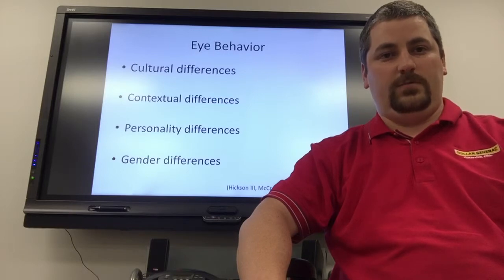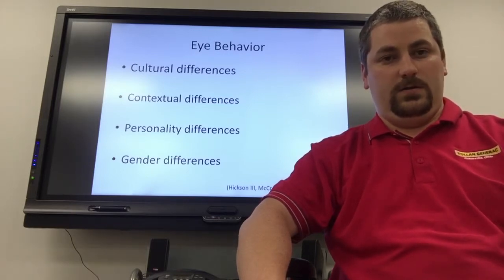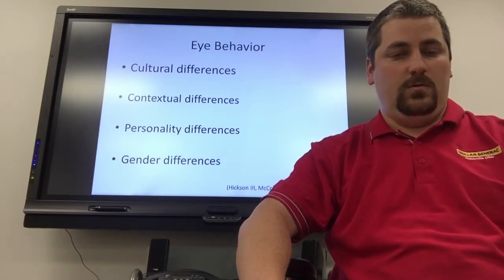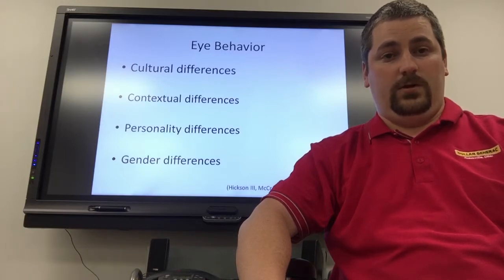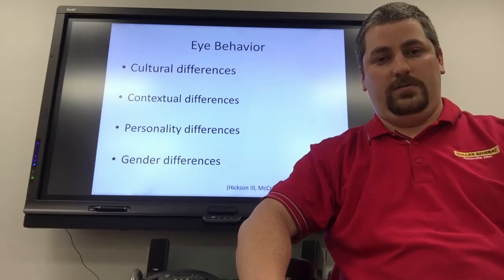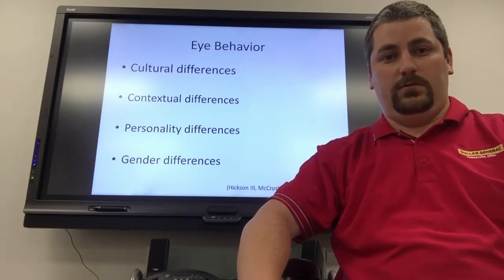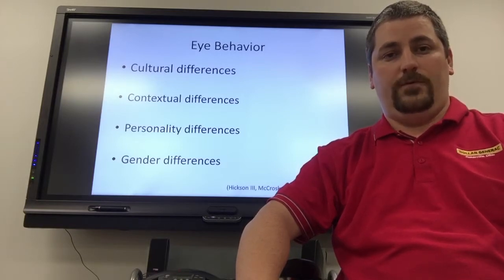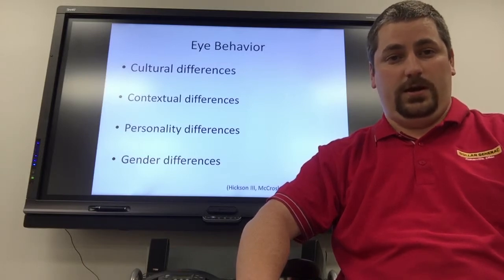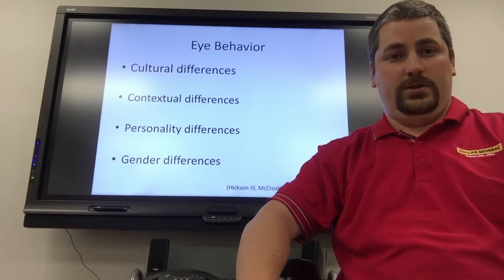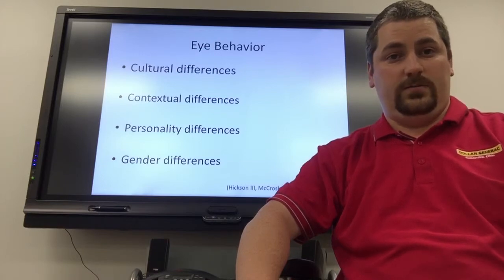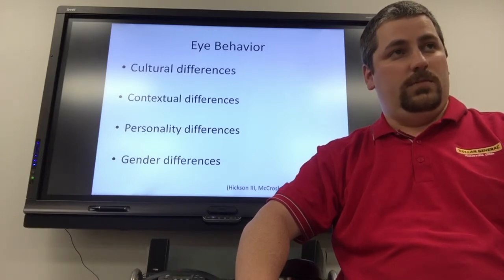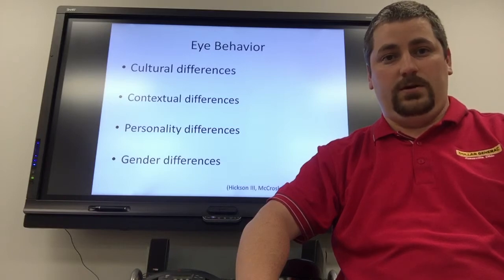We spoke about averting our gaze, and sometimes that's confused with omitting our gaze. Averting our gaze is something we do in the elevator — we acknowledge someone's existence and then look away, or we quickly look away from someone we don't want to speak to. Omitting our gaze means we never looked because we never thought to look. A person may believe we are averting our gaze when we're simply omitting it. So when a customer walks in the room, you want to look over and say hello to acknowledge their existence, so they won't think you're averting your gaze from them.